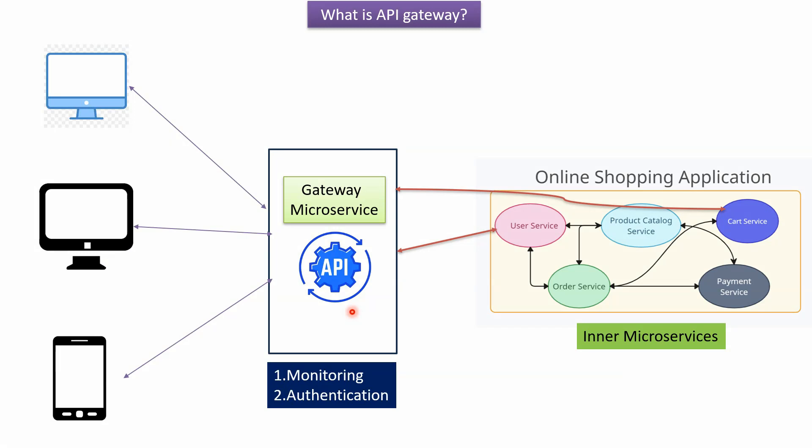We can also perform authentication in the Gateway microservice — if the client has valid credentials, only then can they access the services; otherwise, access is denied. That kind of authentication logic can be placed in the Gateway microservice. There is an open-source API Gateway implementation called Zuul, developed by Netflix. We can use Zuul as an API Gateway, which will accept requests from different clients and route them to the appropriate microservices.